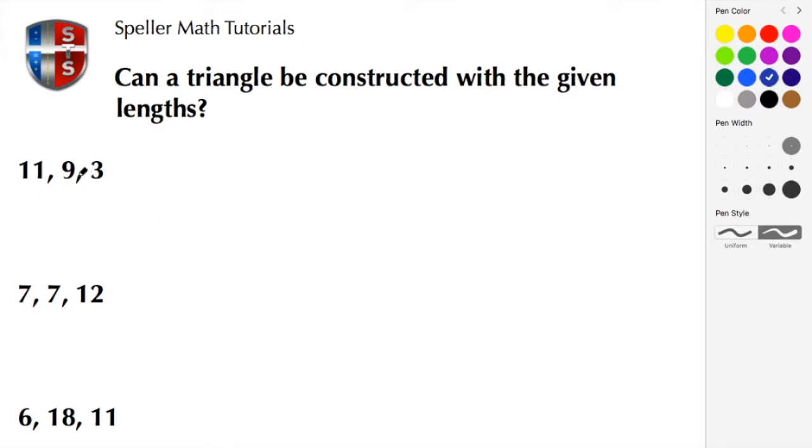Here we have the three lengths of 11, 9, and 3. What we need to do is take the two shorter lengths and add them together. So here we have 9 plus 3, and that sum or total needs to be greater than the length of the third side. In this case, that side is 11.